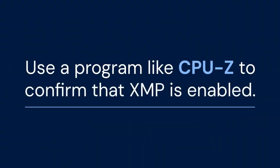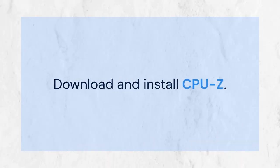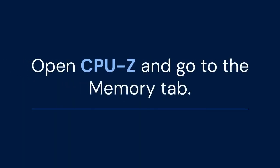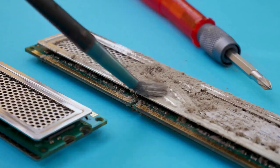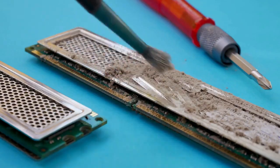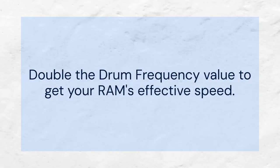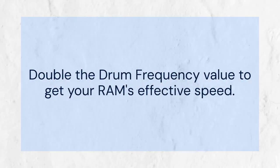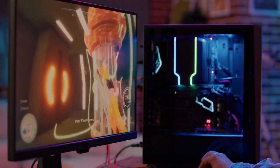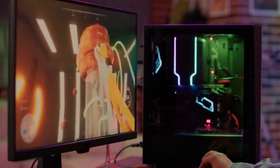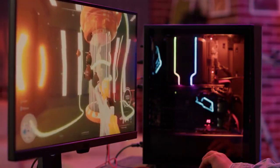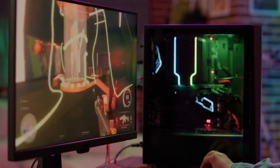To confirm that XMP is enabled, you can use a program like CPU-Z. Download and install CPU-Z, open it, and go to the Memory tab. Look at the DRAM Frequency value. Double this value to get your RAM's effective speed. If the speed matches the XMP profile you selected, then XMP is successfully enabled.